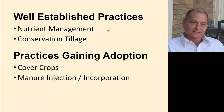I'll talk about some well-established practices such as nutrient management — including the phosphorus index and good nitrogen management. Conservation tillage is also well established; in Pennsylvania approximately 60% of cropland is under some kind of conservation tillage. Then I'll talk in more detail about practices gaining adoption, such as cover crops and manure injection.